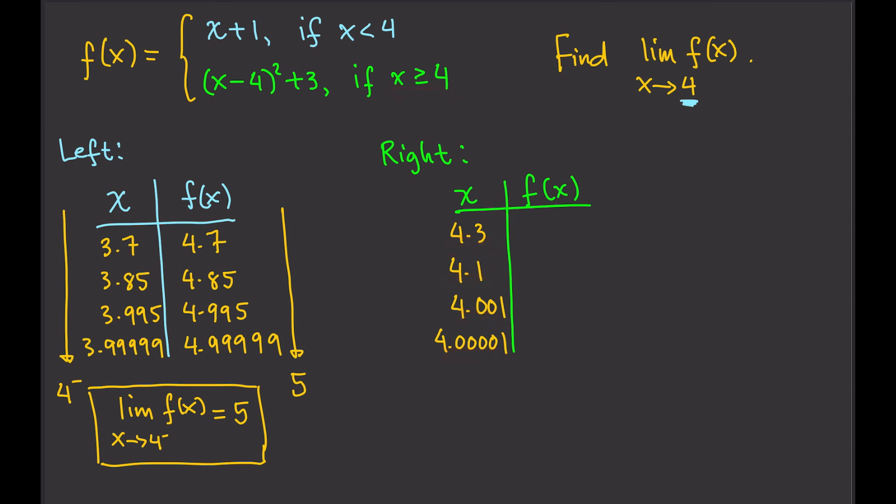So plug in 4.3 here. So 4.3 minus 4 is 0.3. 0.3 squared plus 3. That gives us 3.09. So that's 3.09 right there. Then for this one, we'll get 3.01. Here, we will get 3.0000001.